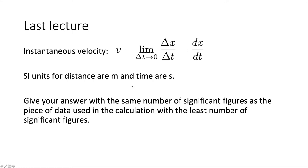The instantaneous velocity is the velocity at an instant, given by the limit as the change in time goes to zero of the change in displacement divided by the change in time — which is just the derivative of position with respect to time. In SI units, distance is measured in meters and time in seconds. We also discussed significant figures: give your answer with the same number of significant figures as the piece of data with the least number of significant figures.